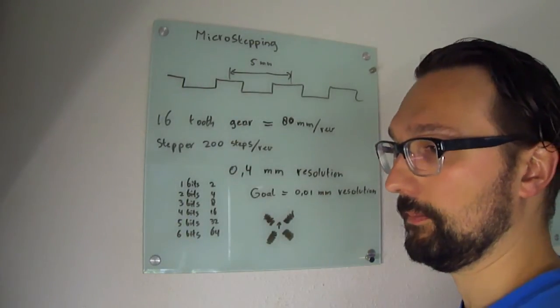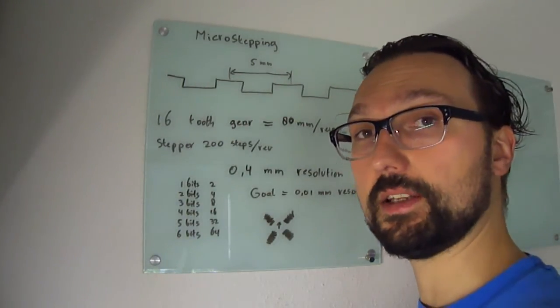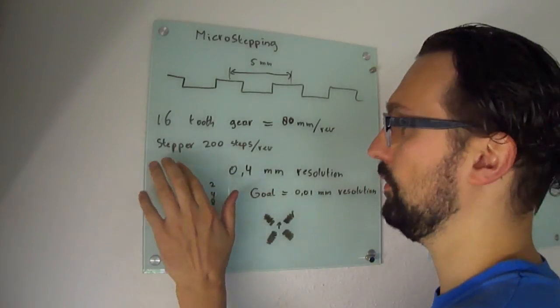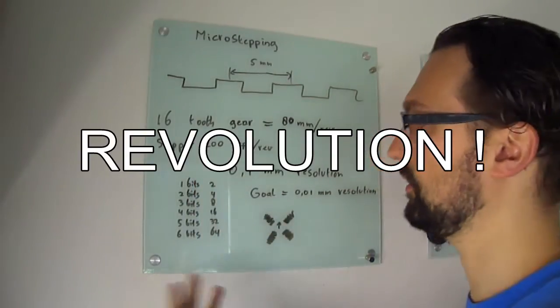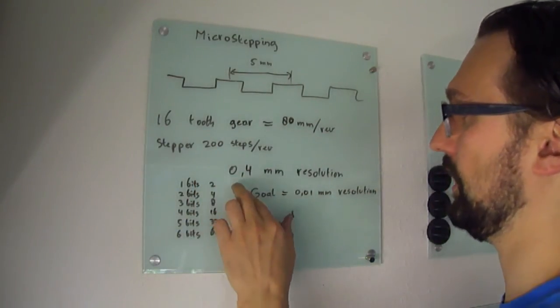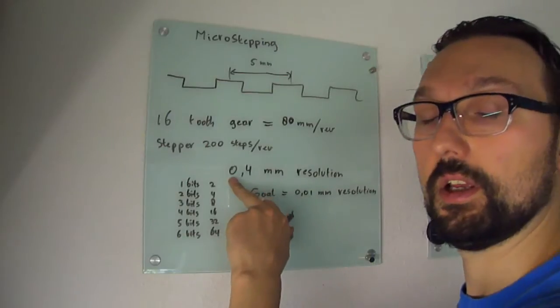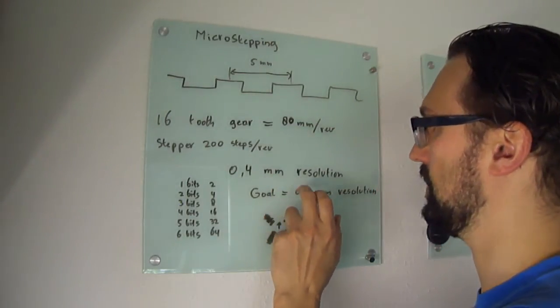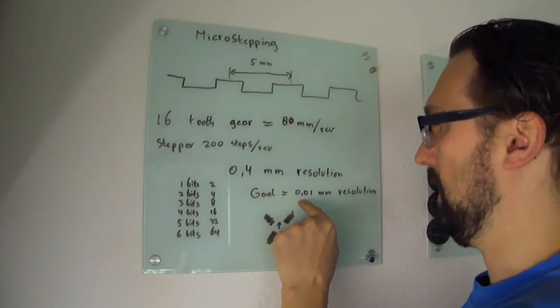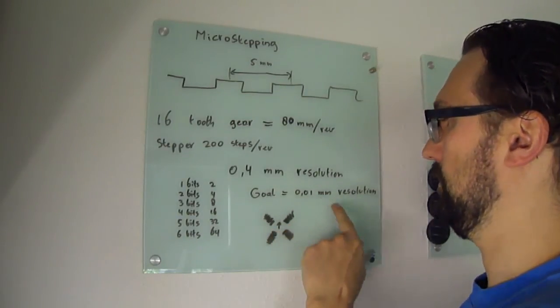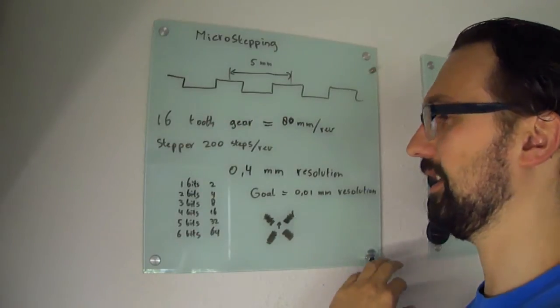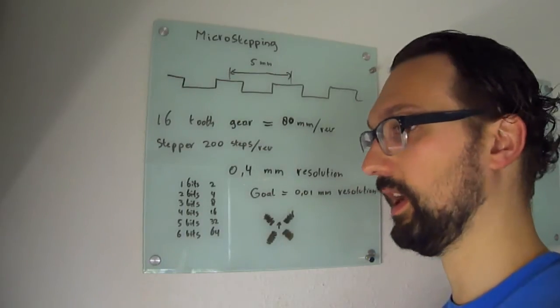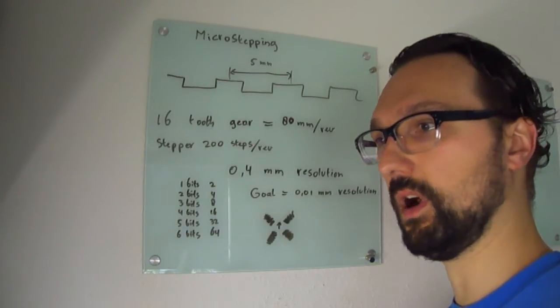So what is the smallest step I can take with the motor? Well the steppers I'm looking into they have 200 steps per revolution. So if I divide those two numbers I will get a resolution without microstepping of 0.4 millimeters. I just told you I'm aiming for the 0.01 millimeters, so that's like a factor of 40 too big. So it's not good enough. So I have to do something to make the resolution higher.